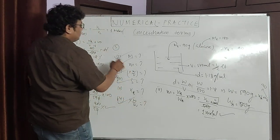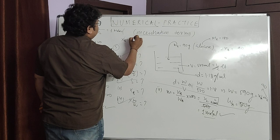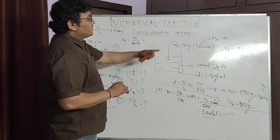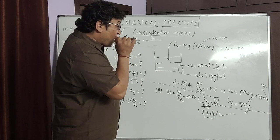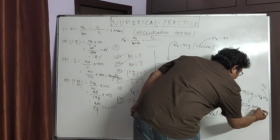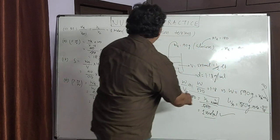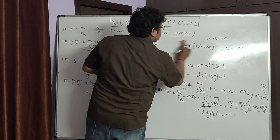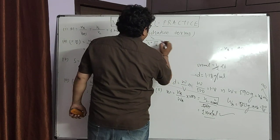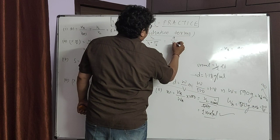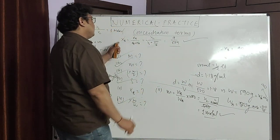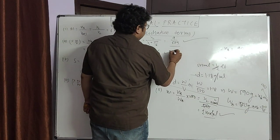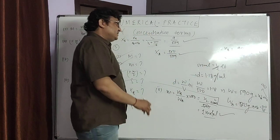Mole fraction of solute: moles of solute divided by (moles of solute + moles of solvent). Moles of solute = 0.5, moles of water = 500/18. So mole fraction of glucose = 0.5 / (0.5 + 500/18) = 9/509. Mole fraction of water = 500/509. The complete question is covered.